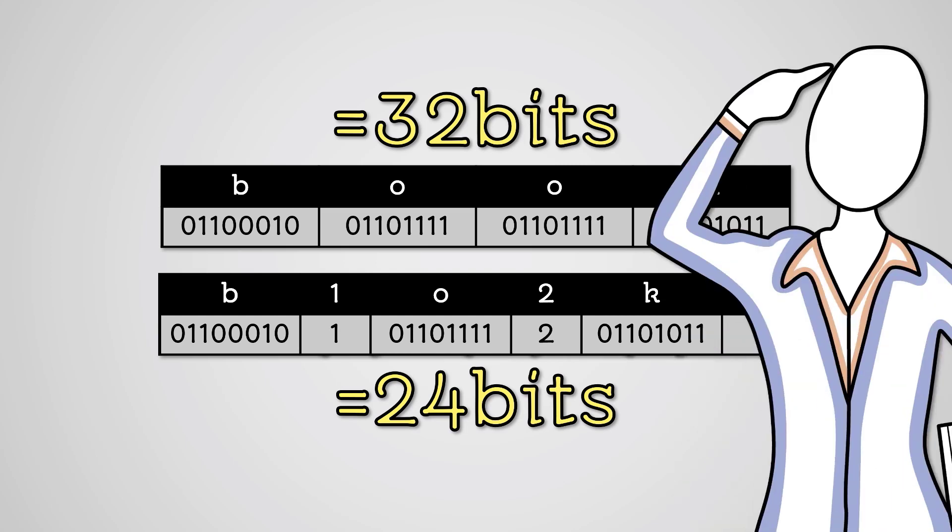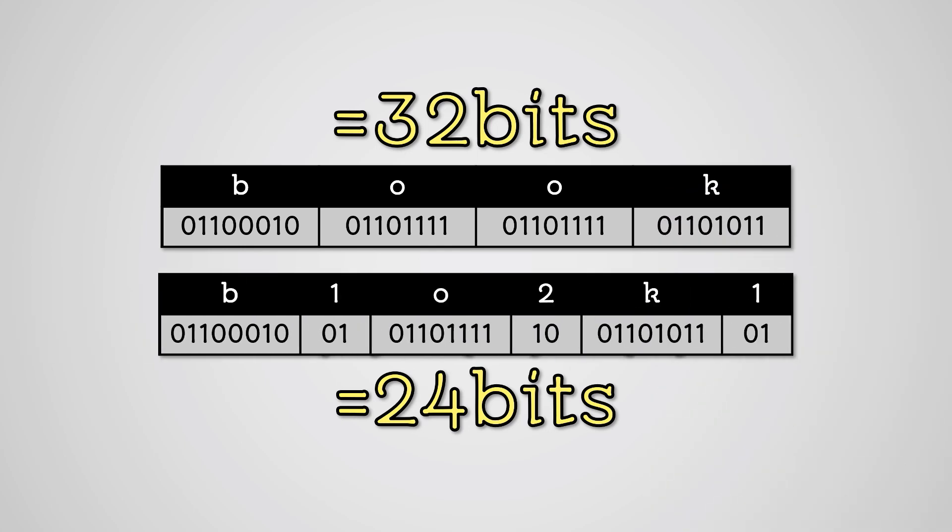But what about the numbers 1 and 2? In a computer, we cannot store these in decimal, so we need to store these in binary. In order to store the number 2, we need 2 binary digits.